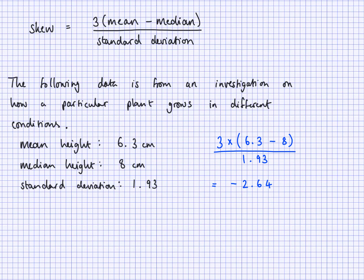So I get a negative value here. The negative value tells me that there is a negative skew. A value of 0 would be a symmetrical distribution; positive numbers indicate a positive skew; and negative numbers indicate a negative skew. The closer it is to 0, the less of a skew we have and the closer it is to a symmetrical distribution. This value of negative 2.64 I would say has a moderate negative skew. Something like negative 4 or negative 5 would be a strong negative skew. And positive 2.64 might have a moderate positive skew, while positive 4 or positive 5 would be a strong positive skew.